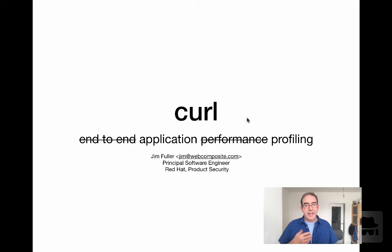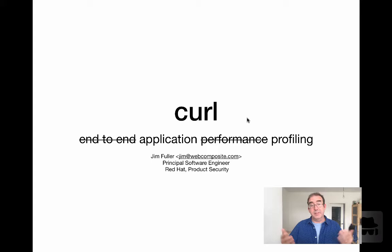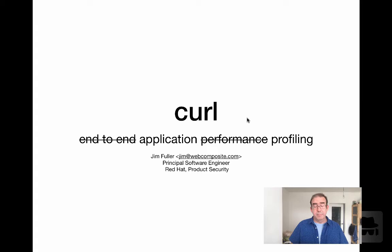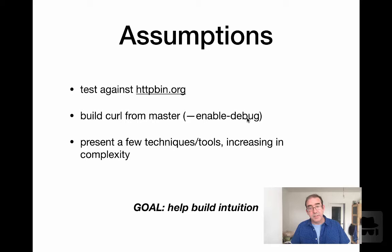I didn't really have a good innate feeling about how curl performed in a local sense — what curl internals are doing, how it's doing it, how many times it's doing it, how much time is being spent. It felt like if I jumped to the end-to-end scenario with lots of load and maybe network degradation and all that type of stuff, I'd be missing some initial conditions. So actually I'm not going to do end-to-end performance — I'm going to talk about how we can profile curl as an application.